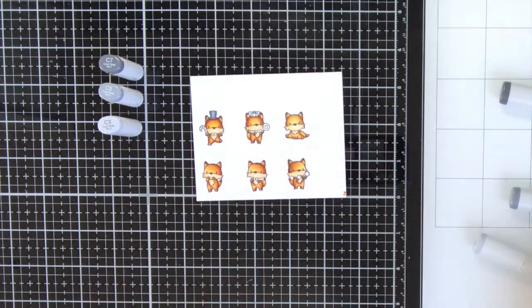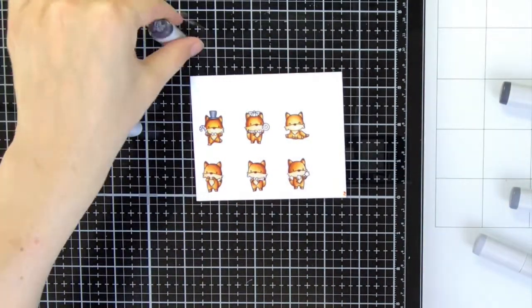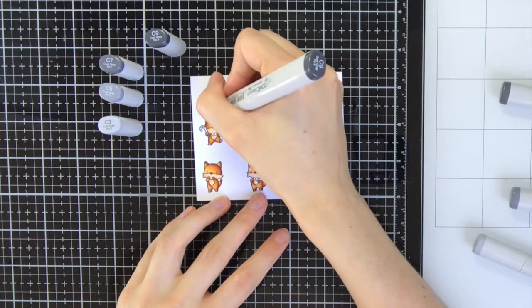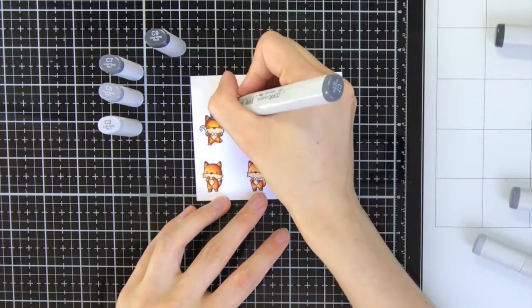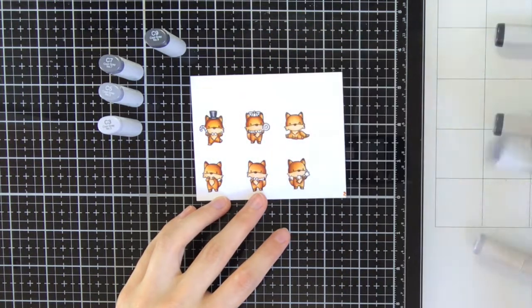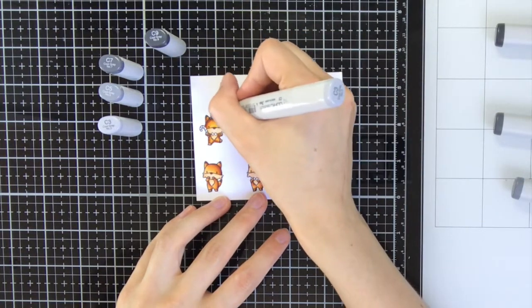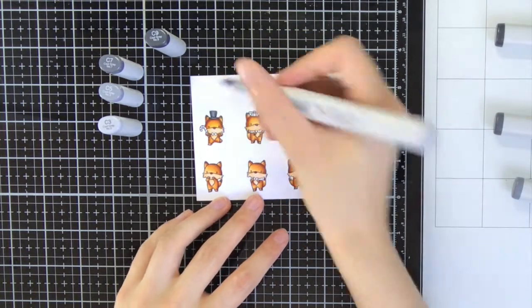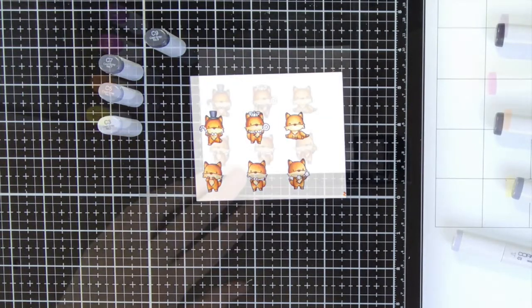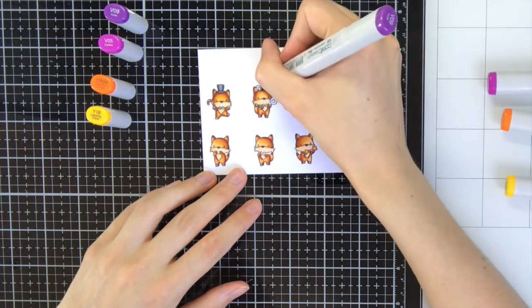Now I have colored all my foxes and it's time to work on the accessories. For the hat I am using C7, C5, and C3. But after that first layer I found there was not enough contrast so I decided to also use the C9. This really makes a lot of difference as you can see.